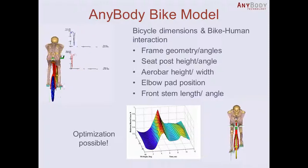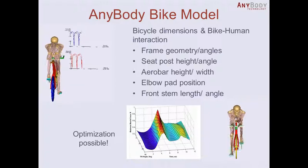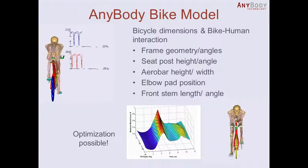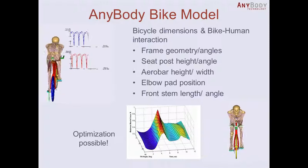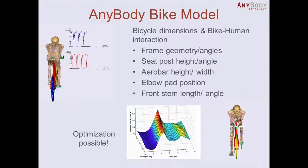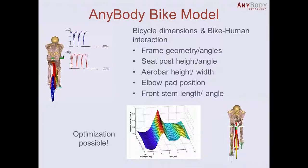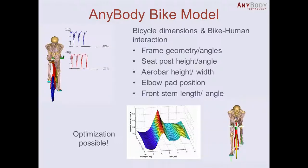You can also look at different elbow pad positions, which will influence the shoulder forces as well. Additionally, you can change the front stem length or angle — whether the rider's upper body is further forward or back, higher or lower — so you can analyze all of those parameters.